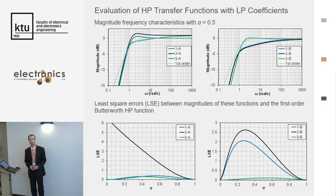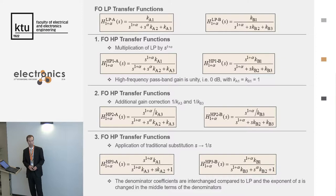The conclusion is that it is advisable to use the substitution of S by 1 over S — this is the best solution to transform low-pass to high-pass in fractional order using the same coefficients obtained for low-pass. This is also known for integer order filters and this transformation works.